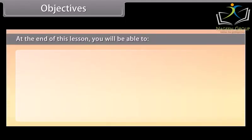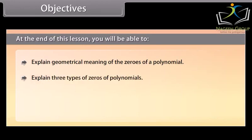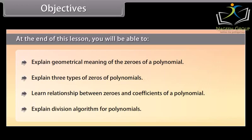Objectives: At the end of this lesson you will be able to explain the geometrical meaning of the zeros of a polynomial, explain 3 types of zeros of polynomials, learn the relationship between zeros and coefficients of a polynomial, and explain the division algorithm for polynomials.